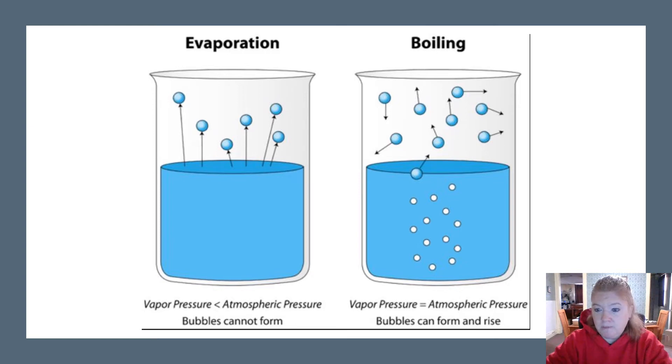What is evaporation versus boiling? If you leave a glass of water out, it's going to evaporate, not boil. Why? In order for it to boil, the vapor pressure has to equal the atmospheric pressure. That allows bubbles to form and rise. Evaporation can happen, but not boiling unless the vapor pressure equals the atmospheric pressure.